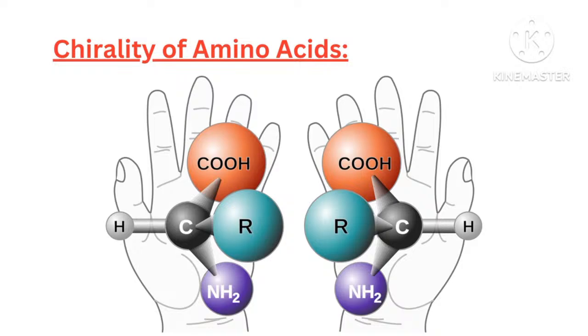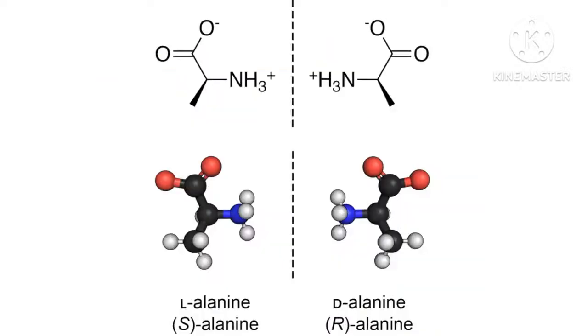Peptide bond formation. A peptide bond is formed by a condensation reaction between the carboxyl group of one amino acid and the amino group of another. The resulting bond is planar and rigid due to partial double bond character. Chains of amino acids form peptides, polypeptides, and ultimately proteins.